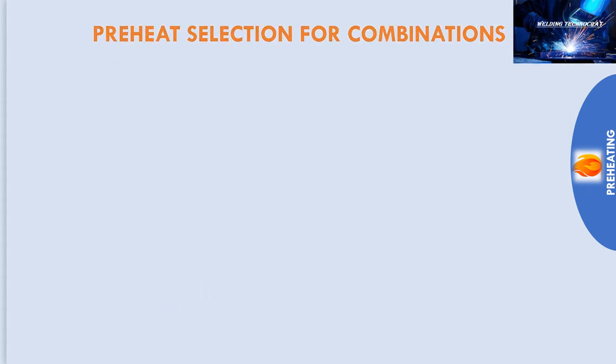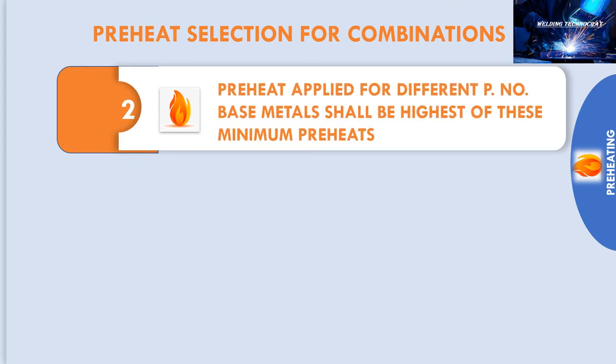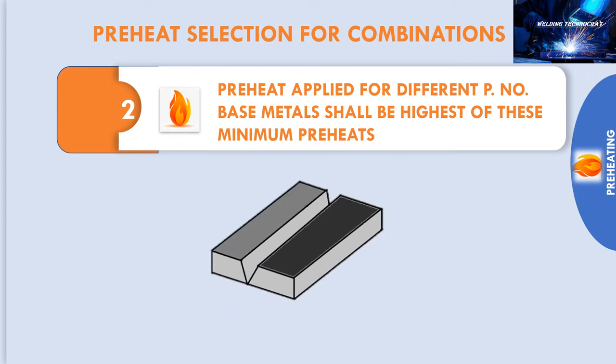The second combination is of different P No. The preheat applied to different P No. base metal shall be the highest of these minimum preheats. For example, Part 1 is P No. 1, Group No. 1, S516, Grade 16, and the minimum preheat is 10 degree Celsius.